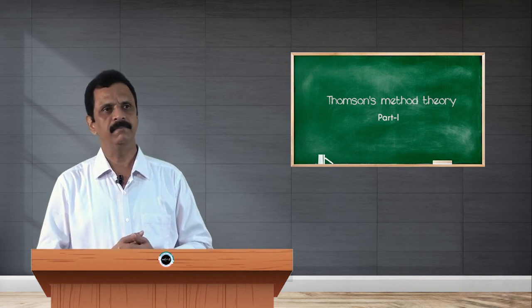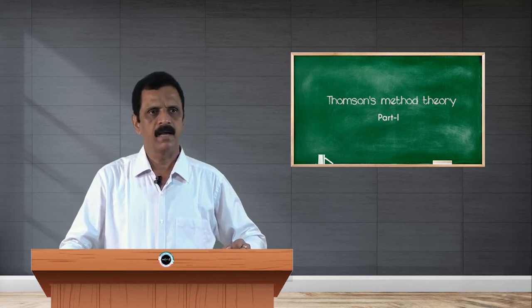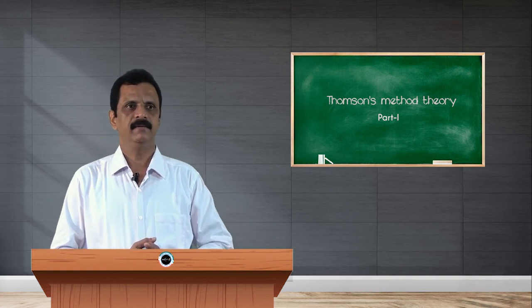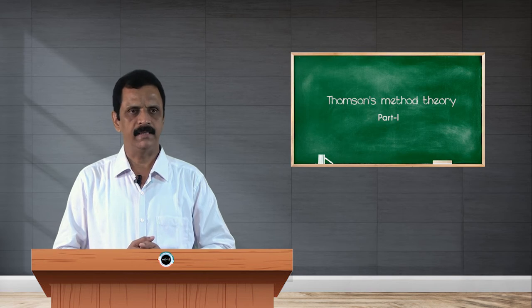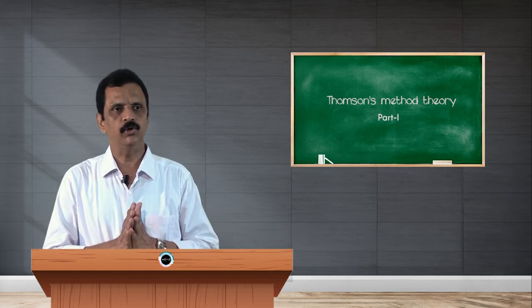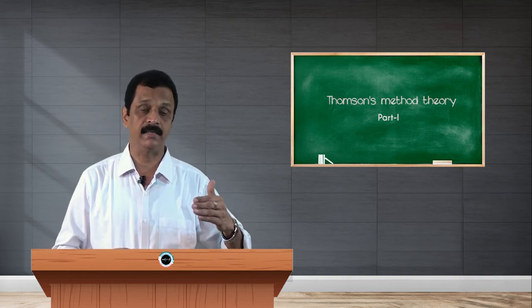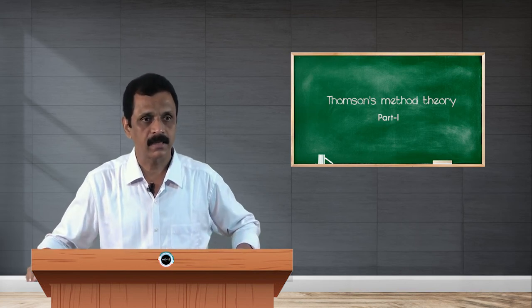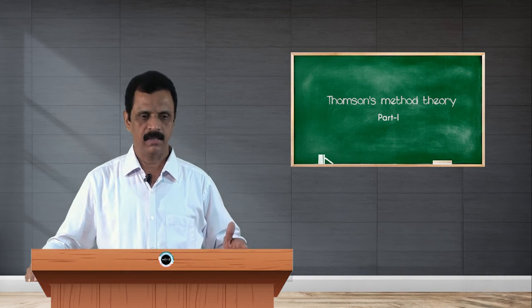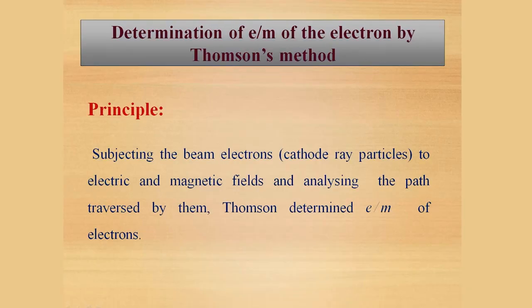Now let us see the principle behind the determination of e by m of electron by Thomson's method. As you know, in the year 1897, J.J. Thomson discovered electrons and thereafter he found the ratio between the charge of the electron and its mass. At that time when these electrons were discovered, in the early years they were known as cathode rays or cathode ray particles because they were originated from the cathode of a gas discharge tube. So, e by m of the electrons is given by the ratio between charge of the electron and mass of the electron.